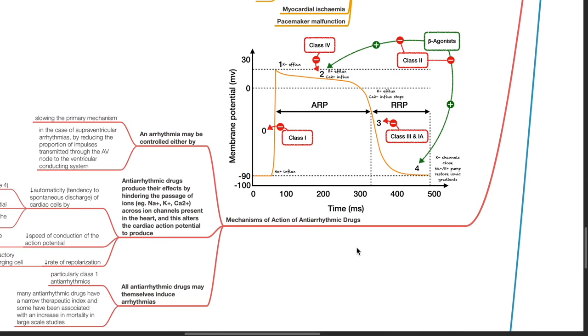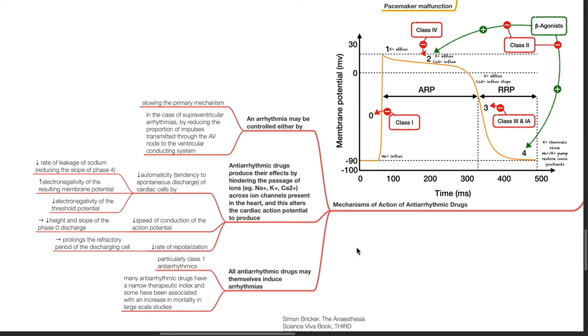Mechanism of actions of antiarrhythmic drugs. An arrhythmia may be controlled either by slowing the primary mechanism, in the case of supraventricular arrhythmias, by reducing the proportion of impulses transmitted through the AV node to the ventricular conducting system. Antiarrhythmic drugs produce their effects by hindering the passage of ions such as sodium, potassium, or calcium across ion channels present in the heart, and this alters the cardiac action potential to produce reduced automaticity, reduced speed of conduction of the action potential, and reduced rate of repolarization.